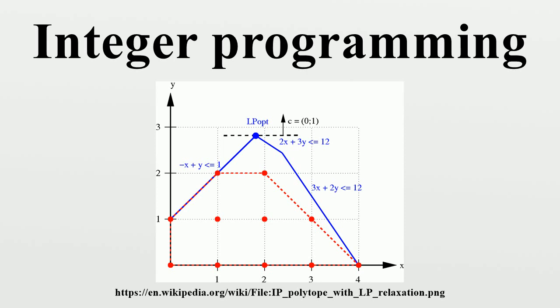To show that every basic feasible solution is integral, let x be an arbitrary basic feasible solution. Since x is feasible, we know that Ax = b. Let x_B be the elements corresponding to the basis columns for the basic solution. By definition of a basis, there is some square sub-matrix B of A with linearly independent columns such that Bx_B = b.